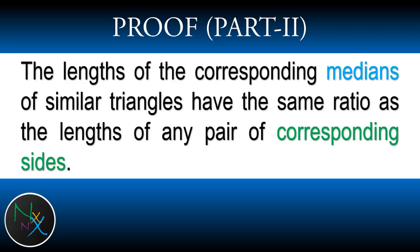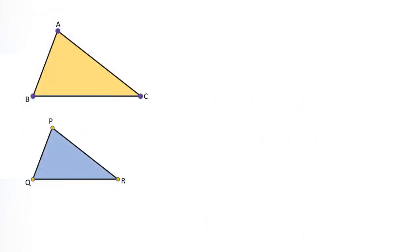Let ABC and PQR be two similar triangles, and AD and PS are their medians. Then we have to prove that the ratio of AB and PQ is the same as the ratio of AD and PS.